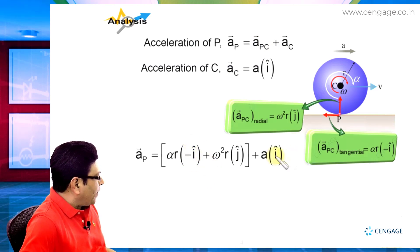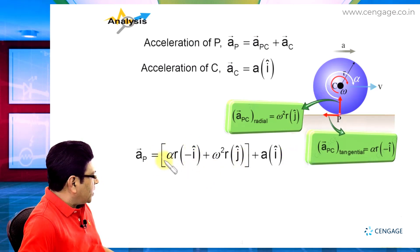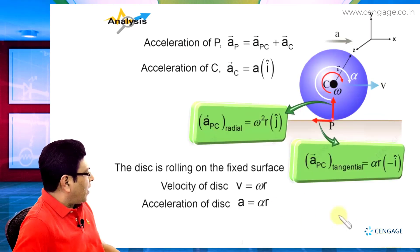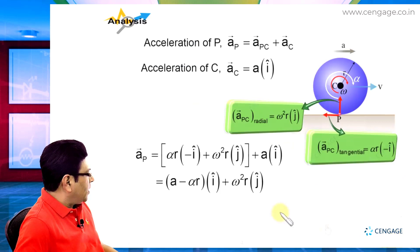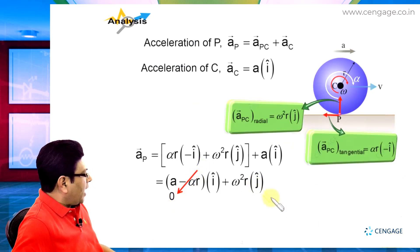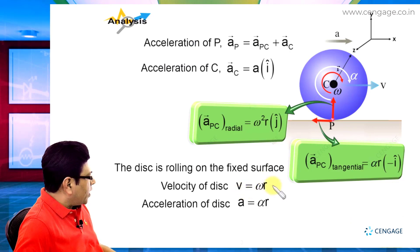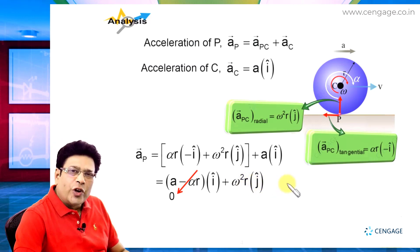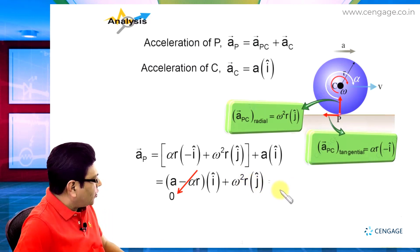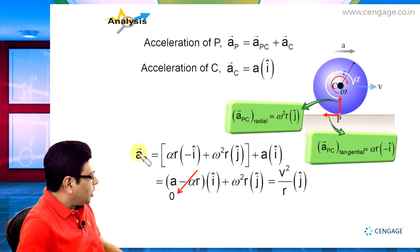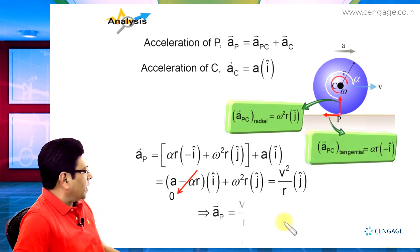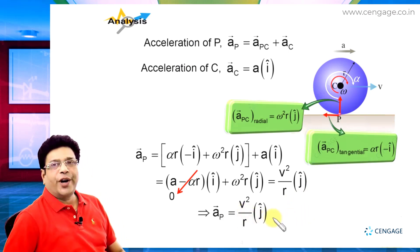We can separate the î and ĵ components. This equation becomes (a minus alpha r) î plus omega² r ĵ. Since a equals alpha r, the î term cancels to zero. Also, omega equals v divided by r. Substituting the value of omega, this equation becomes v² divided by r ĵ. Therefore, the acceleration of point P, the lowest point, is v²/r ĵ. This represents the acceleration of the lowest point directed upward.